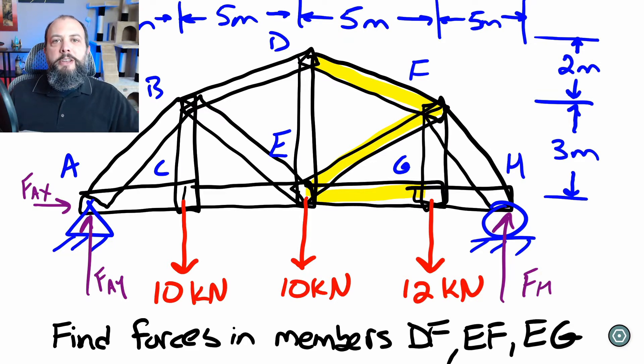The main difference is method of joints is a particle equilibrium solution and method of sections is a rigid body equilibrium solution. If you go method of joints you're going to draw free body diagrams at each joint. If you go method of sections you're going to break the piece in two and then draw a free body diagram for one section.